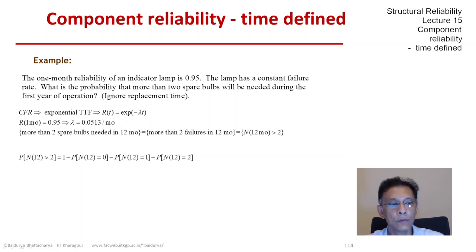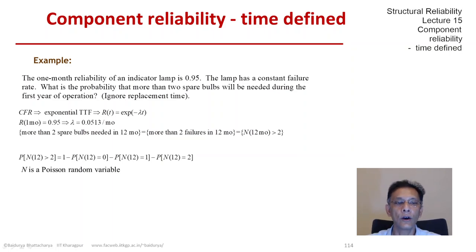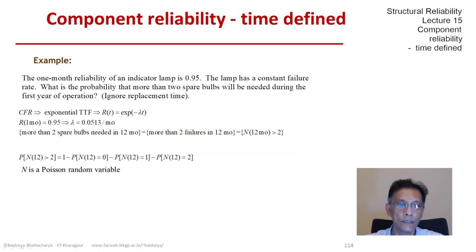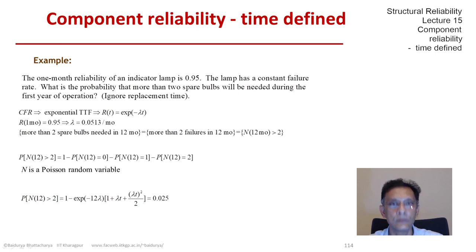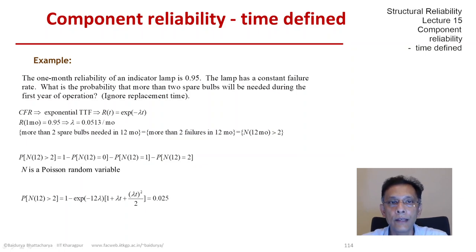P(N in 12 > 2) is the same as 1 minus the probability that there will be 0, 1, or 2 events in that interval of 12 months. Since N is a Poisson random variable — because the underlying process is a Poisson process with rate lambda — we can apply the Poisson PMF formula and find the answer is about 2.5 percent.